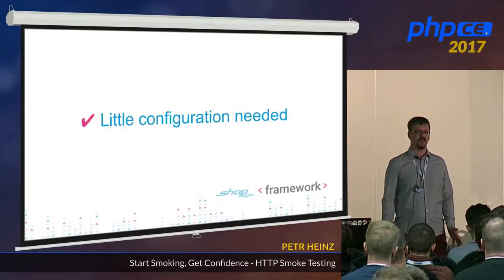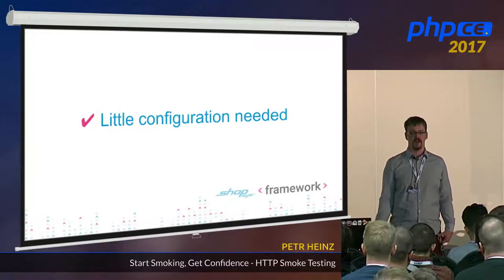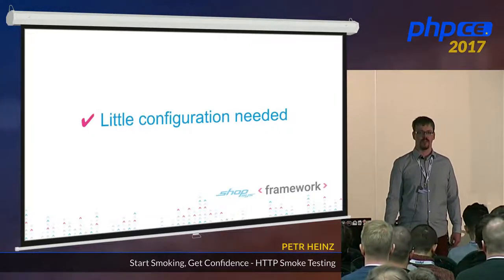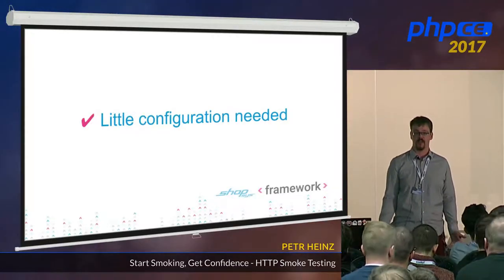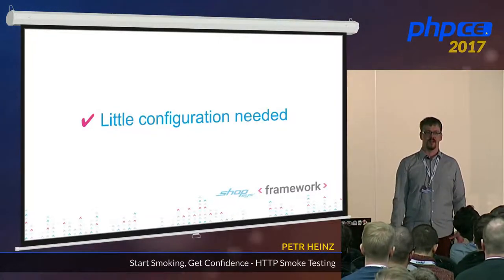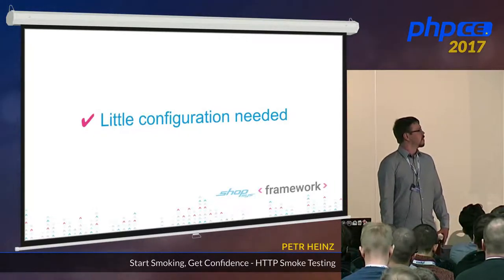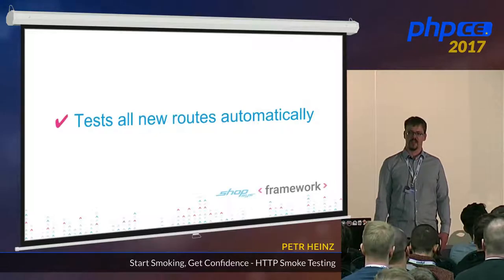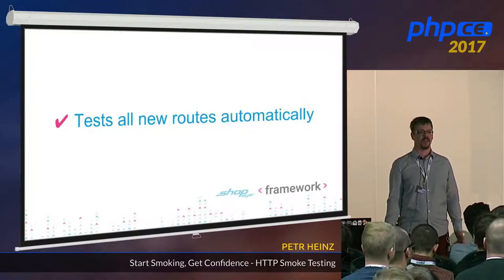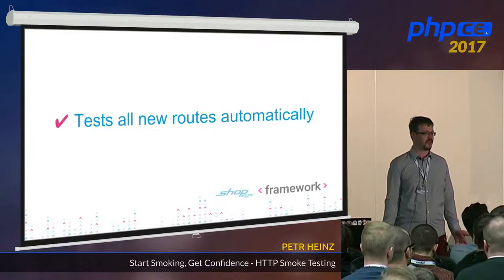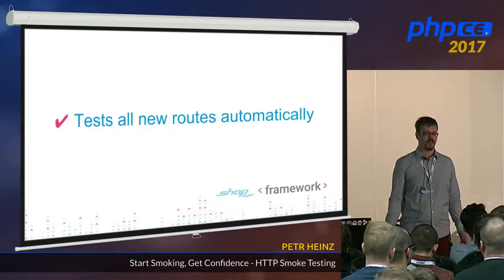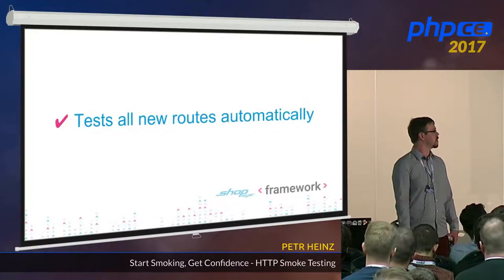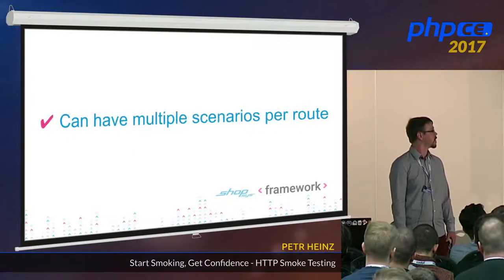The good thing is that it's almost maintenance-free. There is some configuration you'll have to do — you'll have to provide some parameters and say what routes are expecting different status codes than 200, because no application just returns 200 every time. The biggest advantage is that when you add a new route to your project, it starts to test it automatically. You don't have to do anything — just add a new route and a new controller, and it will start testing it.